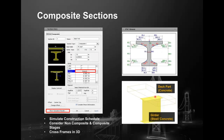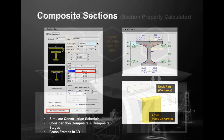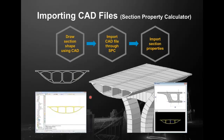For composite sections, the deck part is concrete and the girder is steel, with composite action accounted for. Part one is the girder, which can be steel or concrete, and the deck is concrete. You can simulate the construction schedule and consider non-composite and composite stages across frames in 3D. For irregular sections drawn in AutoCAD, you can import them to the Section Property Calculator, an additional tool provided with Midas Civil.